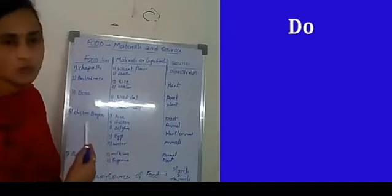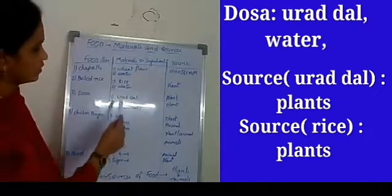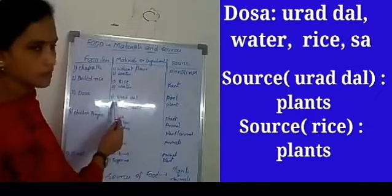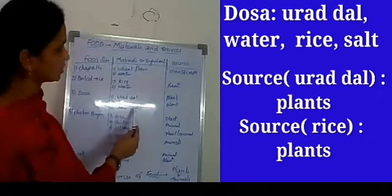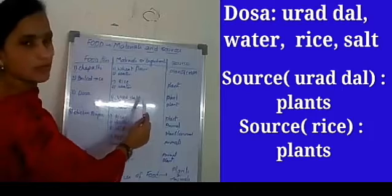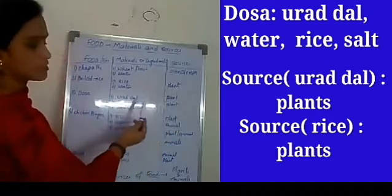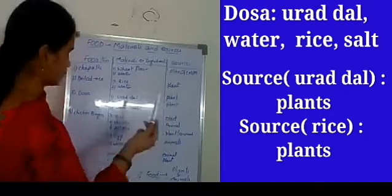Dosa — what are the ingredients required to prepare dosa? Urad dal, rice, water, and salt. Urad dal is a plant source. Rice is also a plant source.